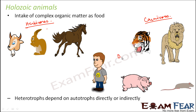There is a third category called omnivores. Human beings fall under this category. Omnivores are those animals which eat both plants as well as animals. Like human beings, they eat plant products and also eat animals like fish or meat. Pigs and rats are also examples of omnivores.